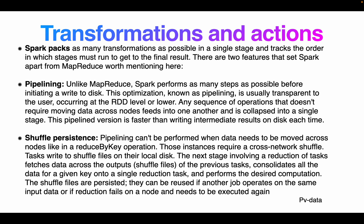There are two features that set Spark apart from MapReduce worth noting: pipelining and persistence. Unlike MapReduce, Spark performs as many steps as possible before initiating a write to disk — this optimization is known as pipelining. Pipelining is mostly transparent to the user, occurring at a lower level. Any sequence of operations that does not require moving data across nodes is collapsed into a single stage. This pipelined version is faster than writing intermediate results to disk.